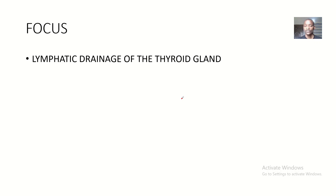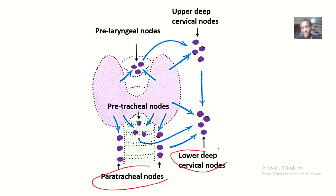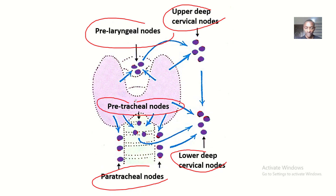Looking at the lymphatic drainage of the thyroid gland, you can identify several types of lymph nodes: the paratracheal lymph nodes, the lower deep cervical lymph nodes, the upper deep cervical lymph nodes, the pre-laryngeal lymph nodes, and the pre-tracheal lymph nodes. Some lymph nodes drain the thyroid gland directly, and then drain into other larger groups of lymph nodes.